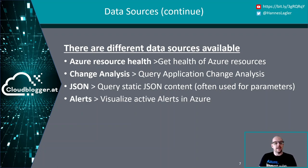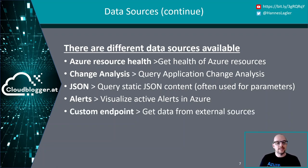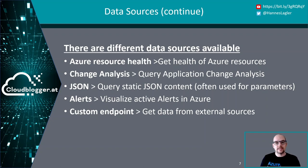We have two more options. The first is alerts — you can visualize active alerts in Azure into Azure Workbooks. And at the end, you have the ability to connect custom endpoints from external sources, other hyperscalers, on-premise, or whatever. Those are the data source abilities you can use in each workbook.